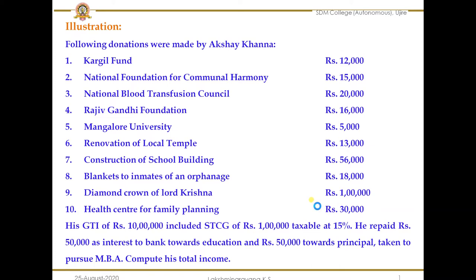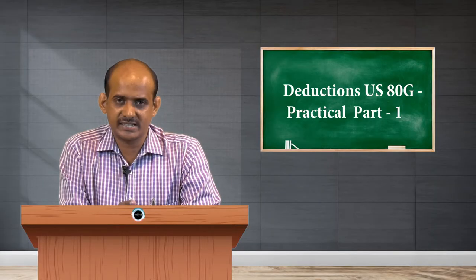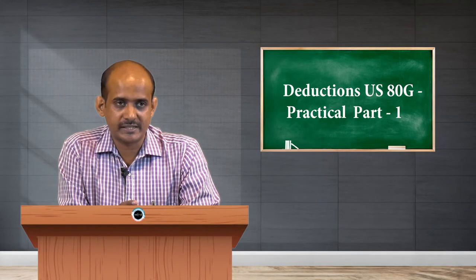The next donation is construction of a school building. Any amount given to construction of a school building is an eligible item, but it falls under the 'with limit' category. So this item will be taken for deduction, but not under the first category — it will be deducted under the second category at the rate of 50 percent.